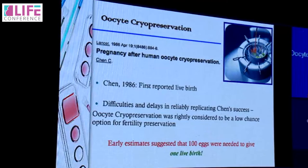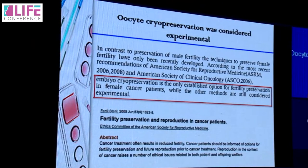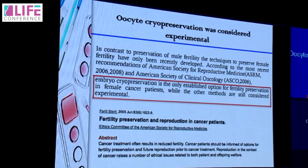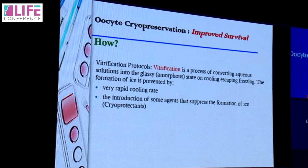Historically, the first reported live birth from a frozen egg was reported by Chen in 1986, but there were tremendous difficulties and delays in reliably replicating his success. Oocyte cryopreservation was considered a low-chance option for fertility preservation — early estimates suggested almost 100 eggs were needed to give one live birth. So until very recently — in fact until 2013 — the ASRM had considered oocyte cryopreservation as experimental. But now everything has changed.